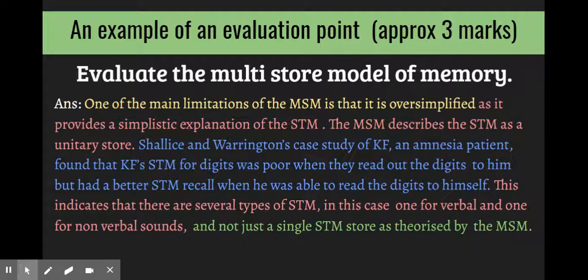Back up with evidence. As you can see with the evidence, we're only looking at findings. Yeah, it found that KF's short-term memory was poor when we did this but better when this was done again. What does this mean? This indicates that there are more than one type of short-term memory, linking it back to the multi-store memory, saying that this does not support what the multi-store model said, that the STM is just a single store.